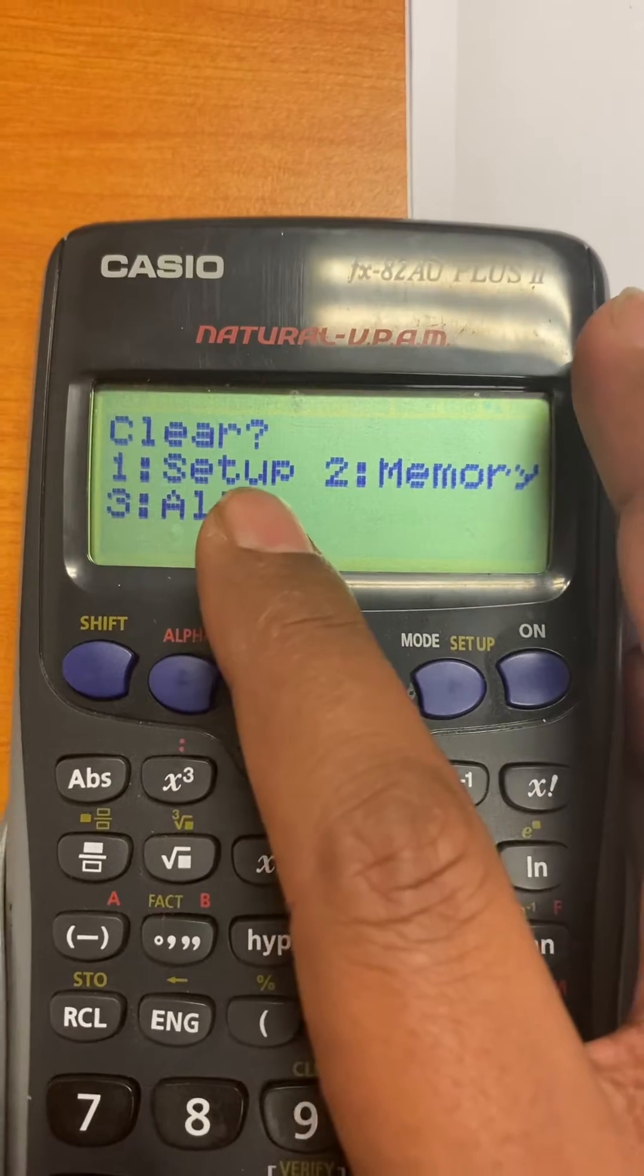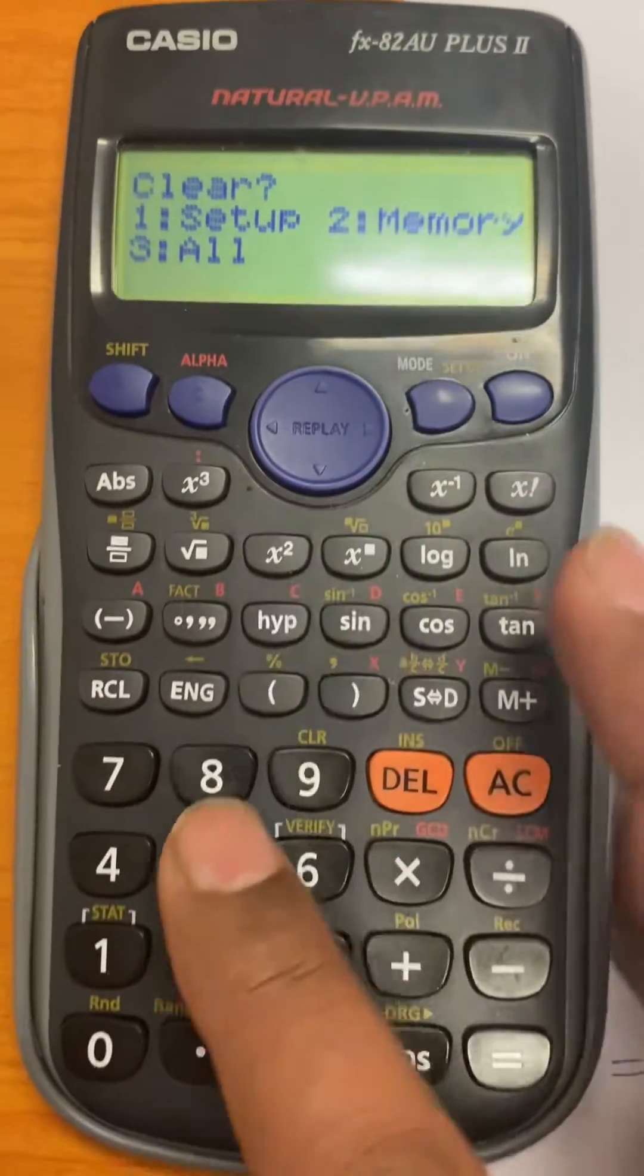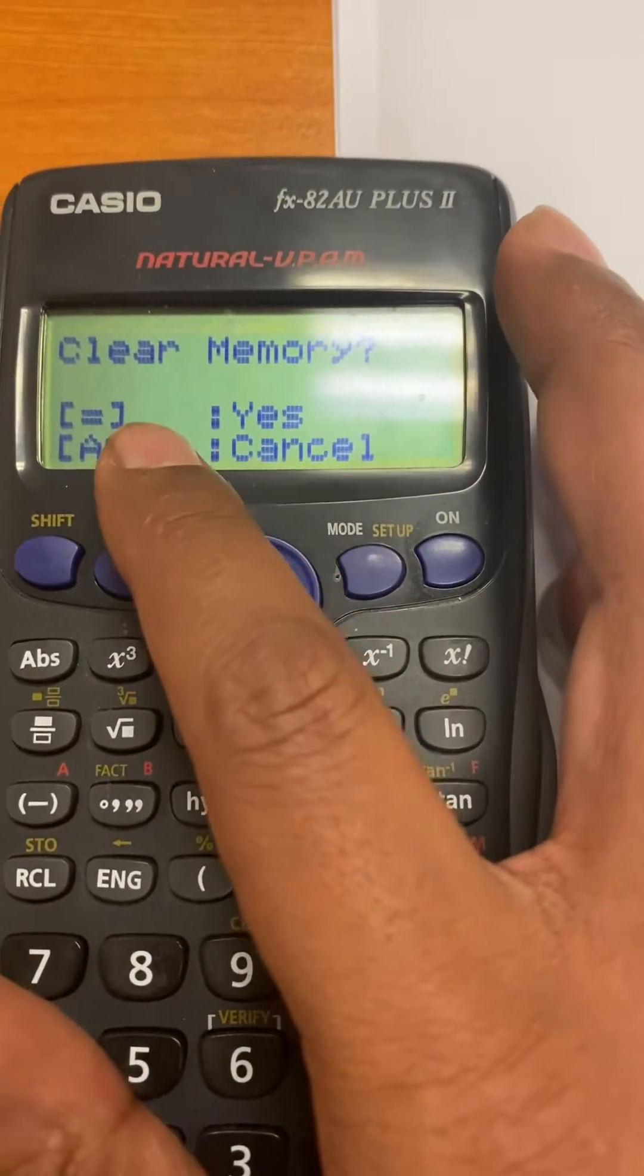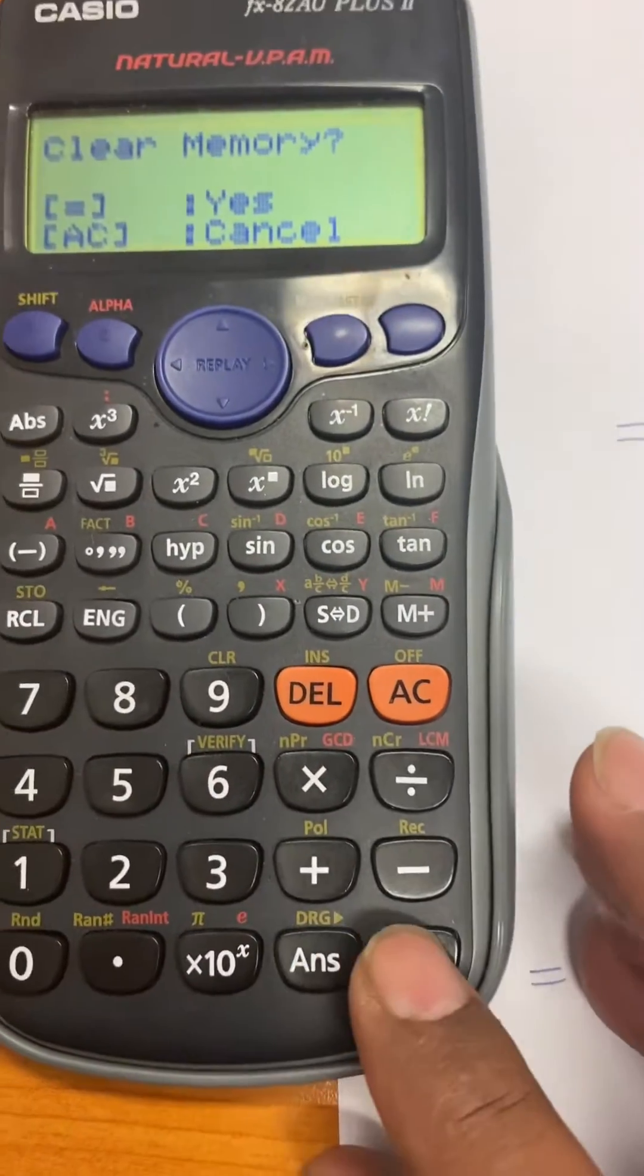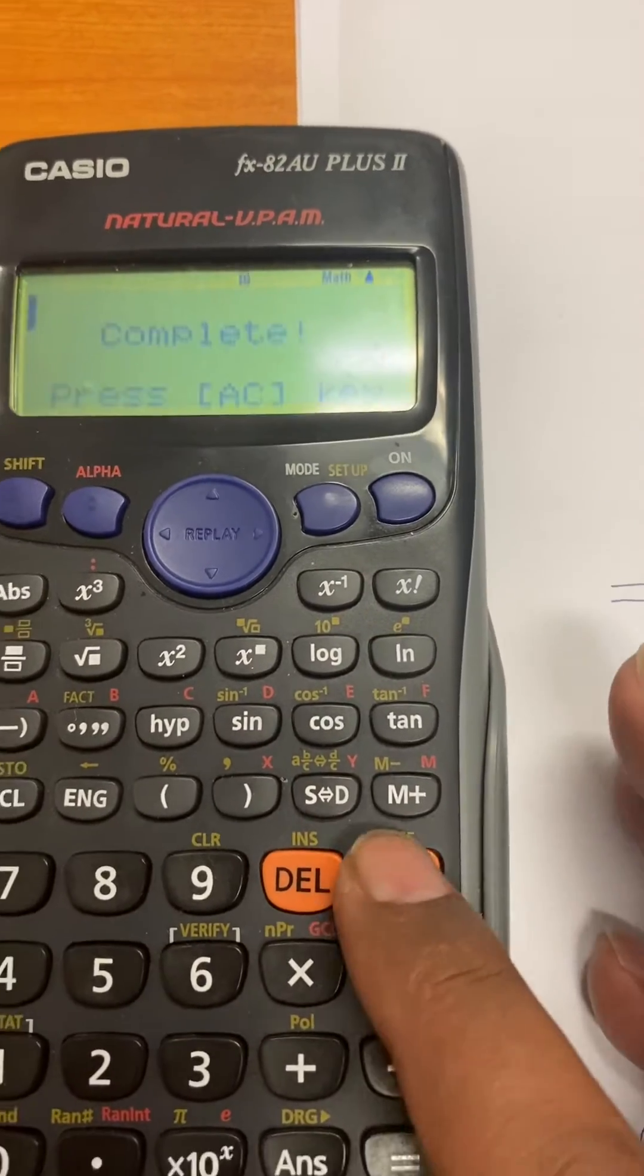So just press clear and then it asks you do you want to set up, do you want to clear the setup or clear the memory or clear everything. So just choose 2 because you only want to clear the memory, not the setup. So when you press 2 it asks you to press the equal to sign to clear memory, so you press the equal to sign. And now it says press the all clear key to continue, so I will press the all clear key.